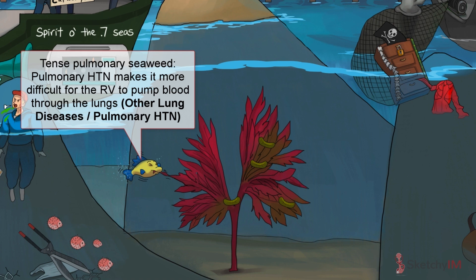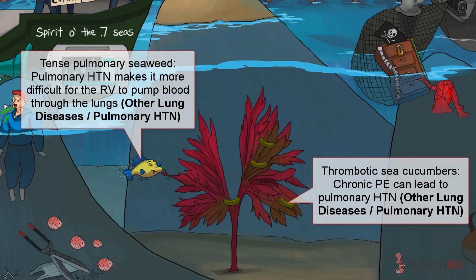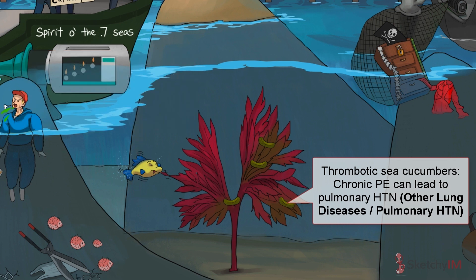Pulmonary hypertension can result from primary pulmonary arterial hypertension, represented by the tense red pulmonary seaweed, or chronic thromboembolic disease, represented by the buildup of those cute little thrombotic sea cucumbers. Trust me, they're not as fun in real life.